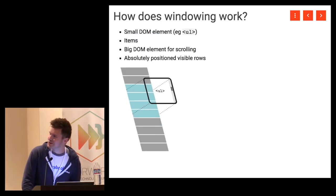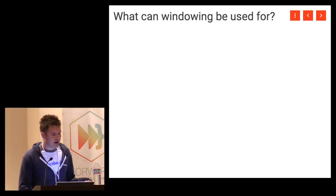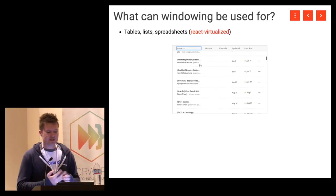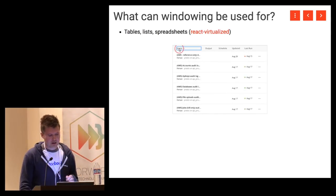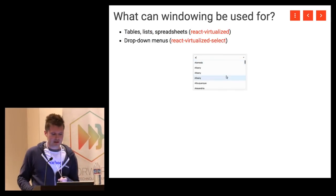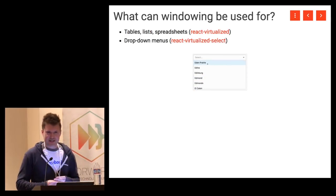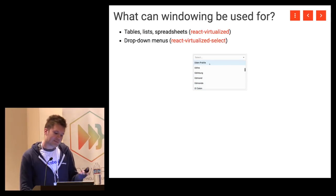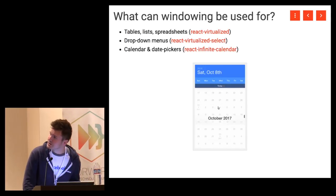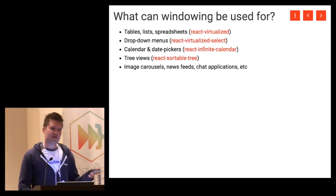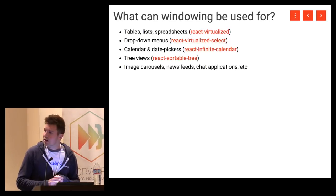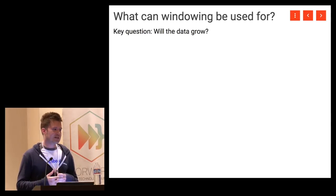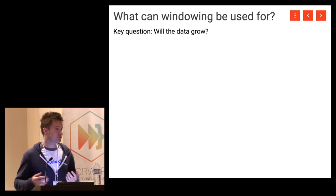There's a lot you can do with windowing beyond a simple list: tables, lists, spreadsheets, dropdown menus, calendars and date pickers, trees, and a ton of other things — including larger applications like news feeds like Facebook or Twitter, or chat applications like Slack or Messenger. The key question to ask yourself is: will this data grow over time? If it will, there's a really good chance you should consider windowing it. That way your application won't slow down as users use it more and more.